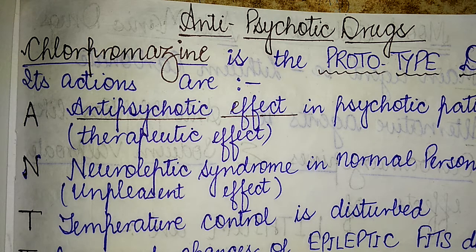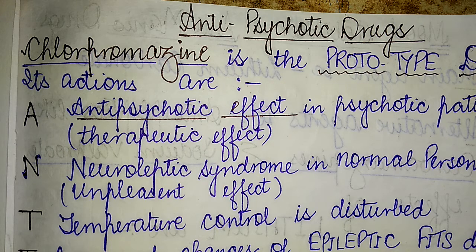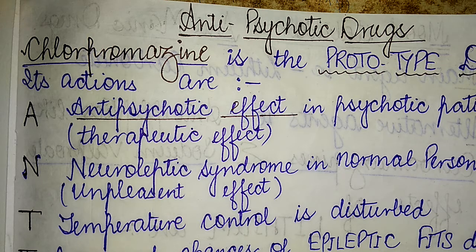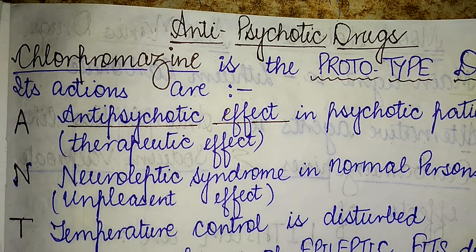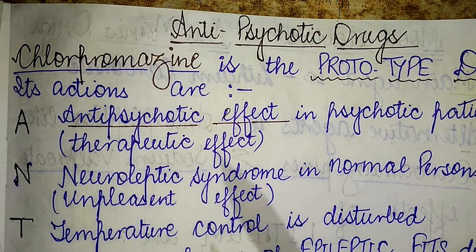A prototype drug is the first form of a drug or medication that is used to create an alternative form — they are also called lead drugs. So for anti-psychotic drugs, the prototype drug is chlorpromazine. Today we'll be focusing on the actions caused by anti-psychotic drugs. The entire actions of chlorpromazine can be better remembered using the initials of the term 'anti-psychotic.'